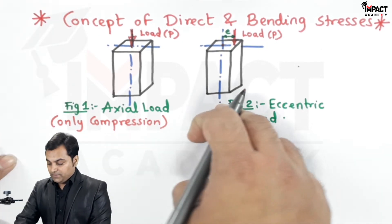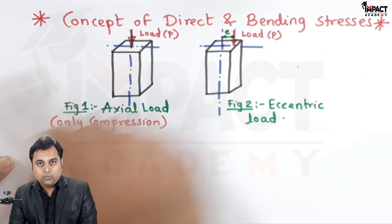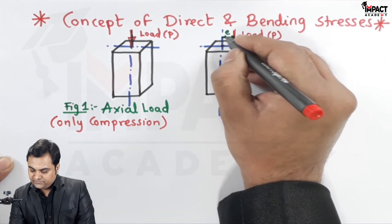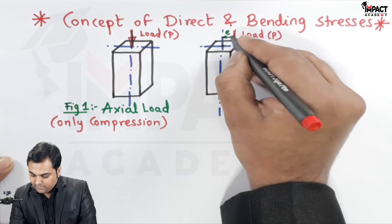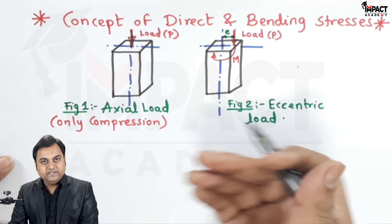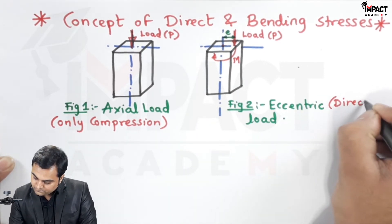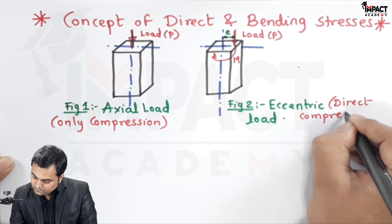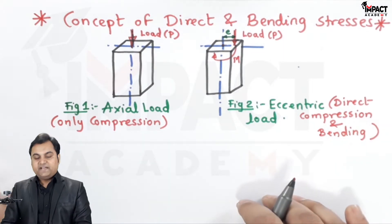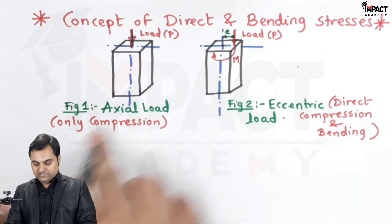Whereas in the second case, when the load is eccentric, there would be compression as well as bending. Why bending? Because this load is acting in the downward direction at an eccentricity 'e' from the axis. When I take the moment about the axis, that would be P into e, and because of that there would be bending. So when the load is eccentric, there is direct compression as well as bending.